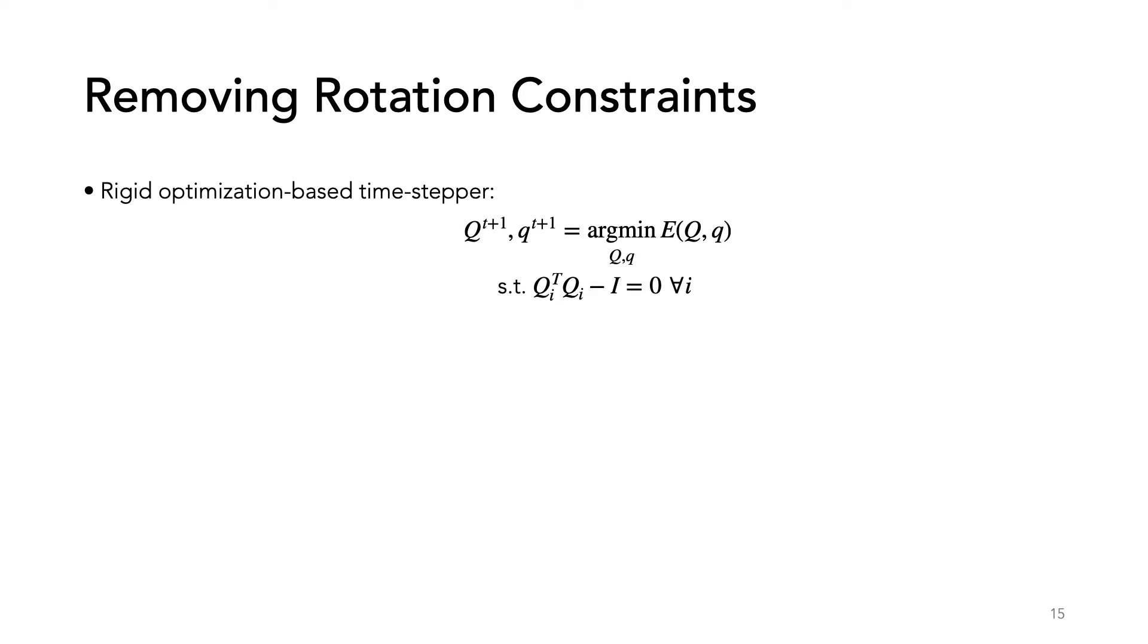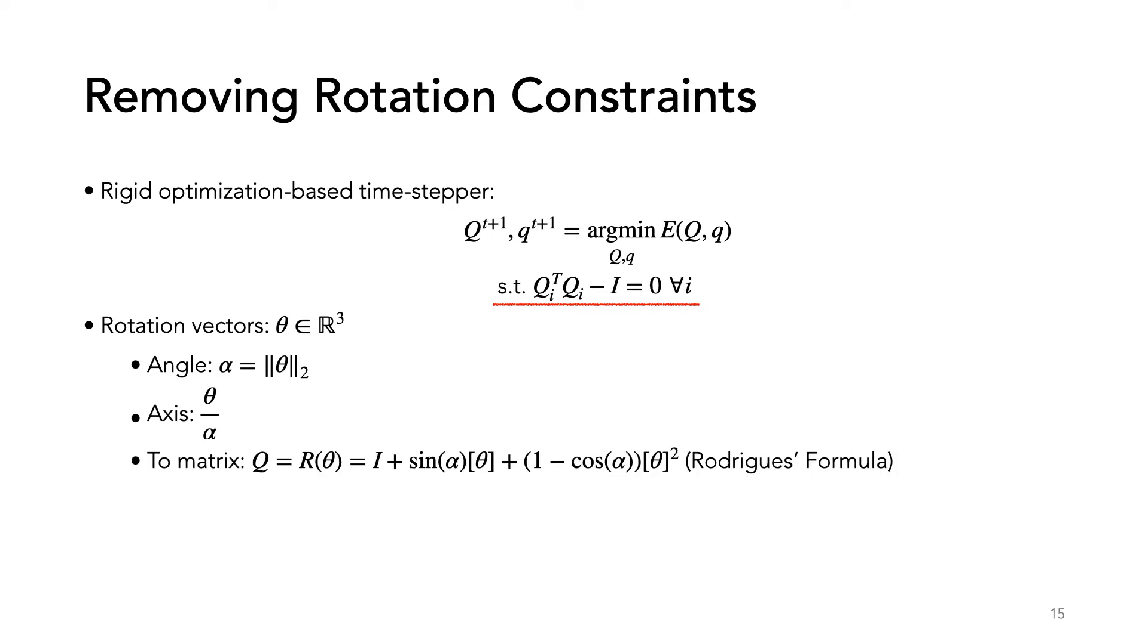If we use this potential directly, we get a nonlinear constraint optimization with a constraint that ensures our rotation matrices remain rotations. Unfortunately, it is difficult to exactly guarantee these constraints throughout our optimization. Instead, what we can do is reparameterize the rotation matrices as rotation vectors, which are vectors in R3 where the angle is the norm and the axis of rotation is the normalized vector. We can easily convert a rotation vector to a rotation matrix using Rodriguez's formula. This results in an unconstrained optimization, which we can solve with a standard Newton's method with line search.